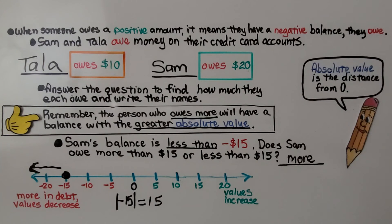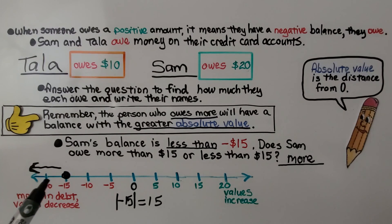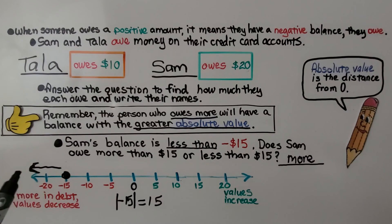What if the temperature outside was less than negative 15 degrees? Would the temperature be below zero more or less than 15 degrees? If the temperature was less than negative 15, it might be negative 16, negative 17, or negative 18, because that would be colder — less than negative 15 degrees. It would be more below zero than 15.